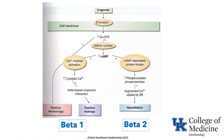Beta-2 effects are also cyclic AMP mediated, but in this case there's augmented calcium uptake by the sarcoplasmic reticulum, usually in vascular smooth muscle, and it vasodilates. So beta-1 effect: heartbeat stronger and faster; beta-2 effect: vasodilation.